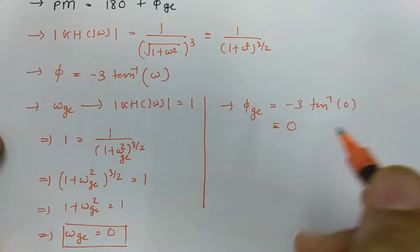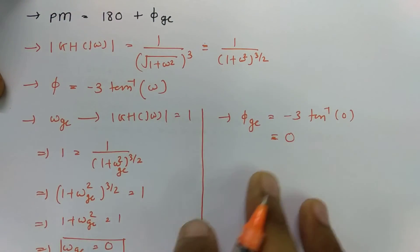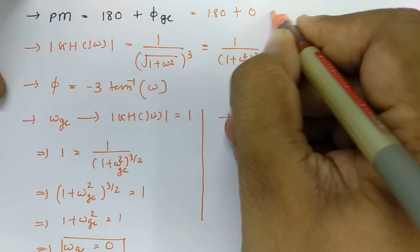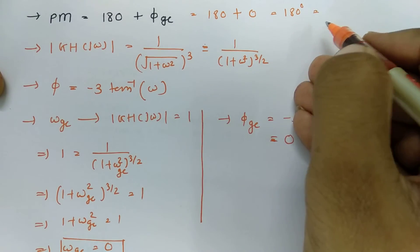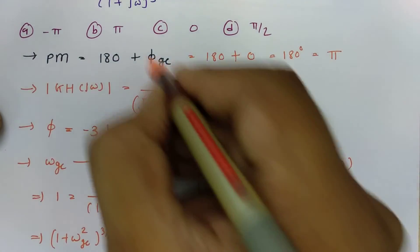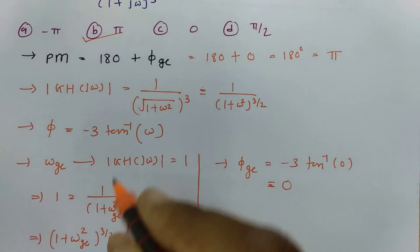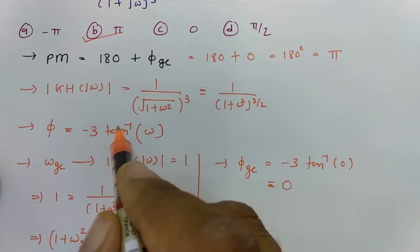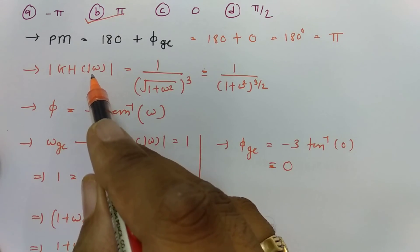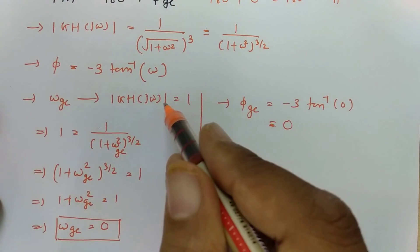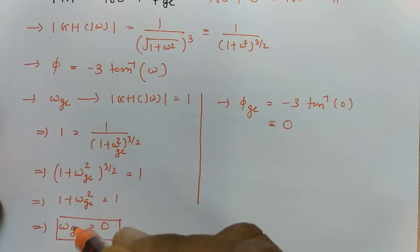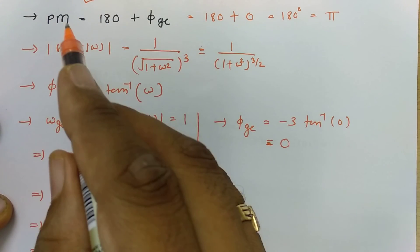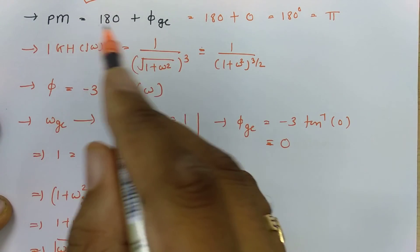Therefore, the phase margin = 180° + 0 = 180°, which in radians is π. To summarize: to calculate the phase margin, find the gain crossover frequency where the magnitude equals 1, substitute that frequency into the phase expression to get the phase at gain crossover frequency, and then substitute that into the phase margin formula.